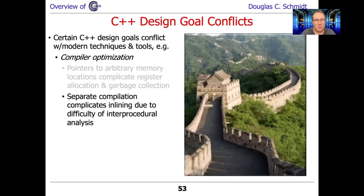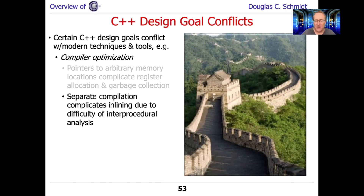Another tricky issue is that C++'s model of separate compilation is inherited from C. When you compile things, they're compiled sort of independently of each other — there's a wall between them, the great wall of shared objects or DLLs. This makes it difficult to do certain kinds of analysis that might skip across method calls in different libraries, DLLs, or shared objects. There are ways of getting around this, but most compilers don't support that, and it's tricky because of the linking semantics in C and C++. So these things conflict with the goal of making code as optimized as possible.